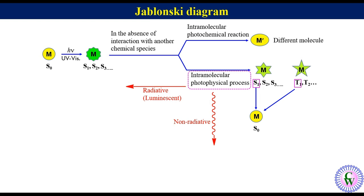Here you should note that a radiative process is shown by a straight arrow while non-radiative one by wavy arrow.